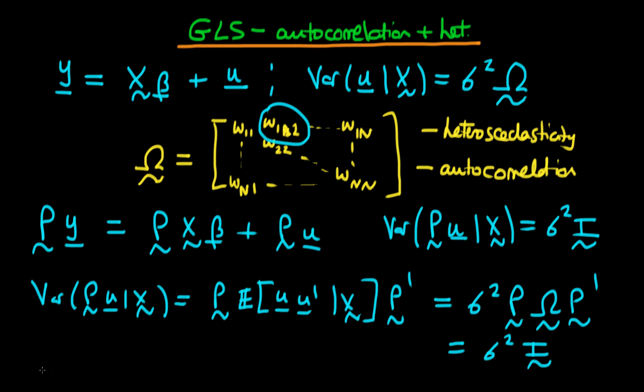But we've already solved this, right? We've already found that P in this circumstance has to be equal to, or can be equal to rather, omega to the power minus one-half.